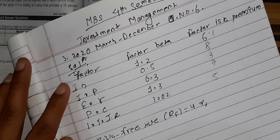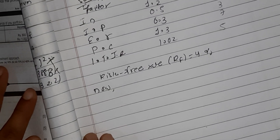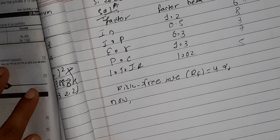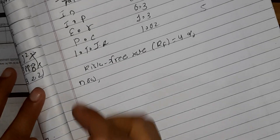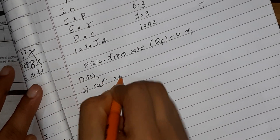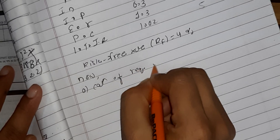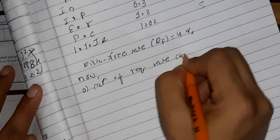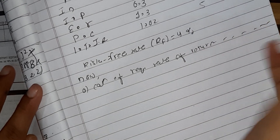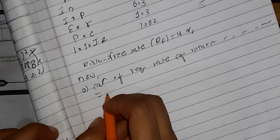The factor betas are 1.2, 0.5, 0.3, 1.3, and 1.02. The factor risk premiums are 6%, 8%, 3%, 7%, and 5%. Now, looking at the question: if T-bills currently offer 4%, find the required rate of return on the stock. We need the calculation of required rate of return.